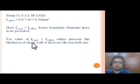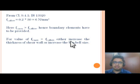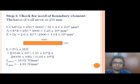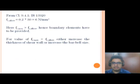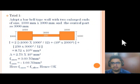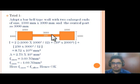Since the maximum stress exceeds the allowable value, we either increase the thickness of the shear wall or provide a barbell section at both ends. Taking Trial 1: adopt a barbell-type wall with two enlarged ends of size 1000 mm × 1000 mm, keeping the central part the same. The new section has 1000 × 1000 mm barbell ends with a central part of length 3000 mm and thickness 250 mm.